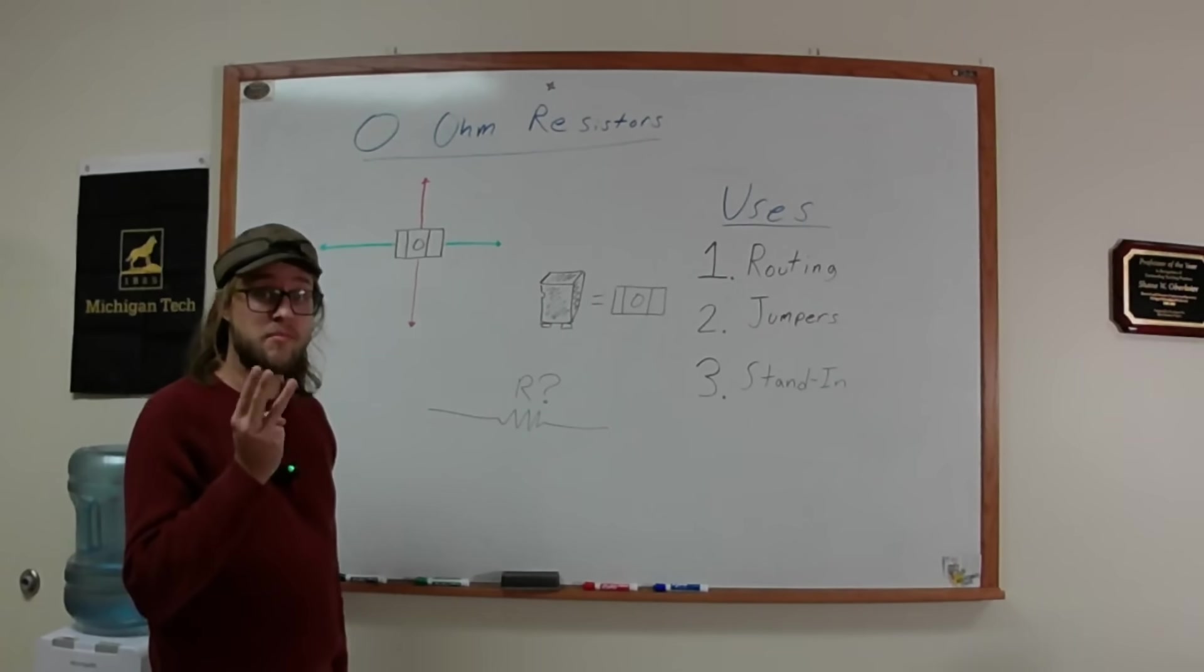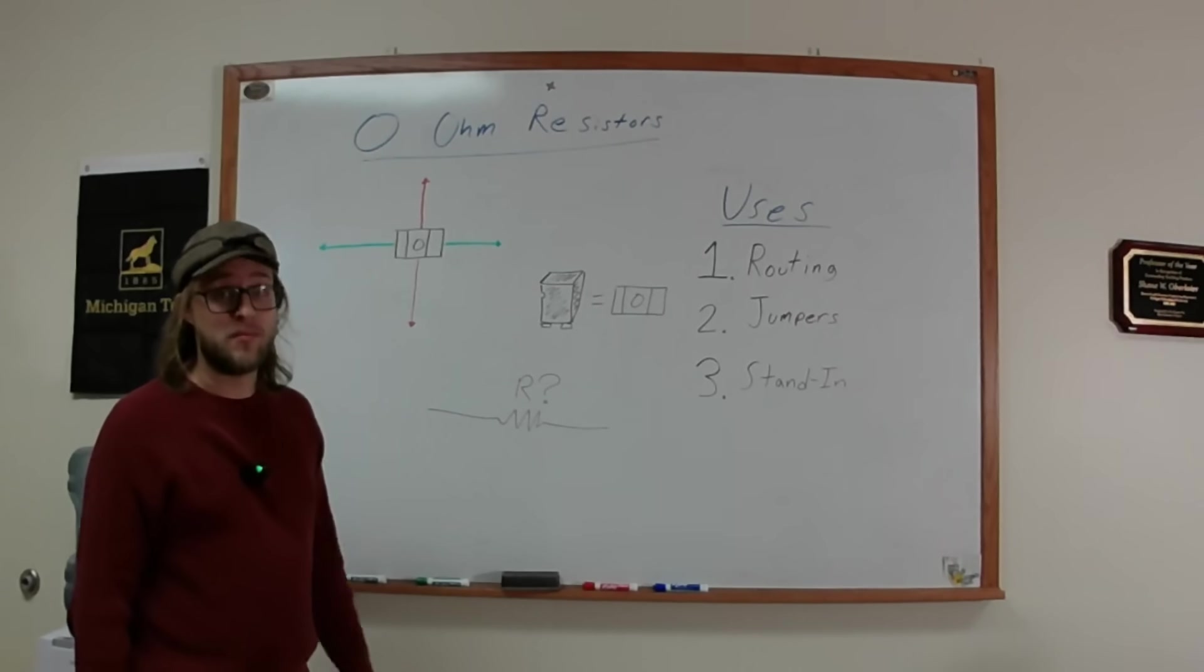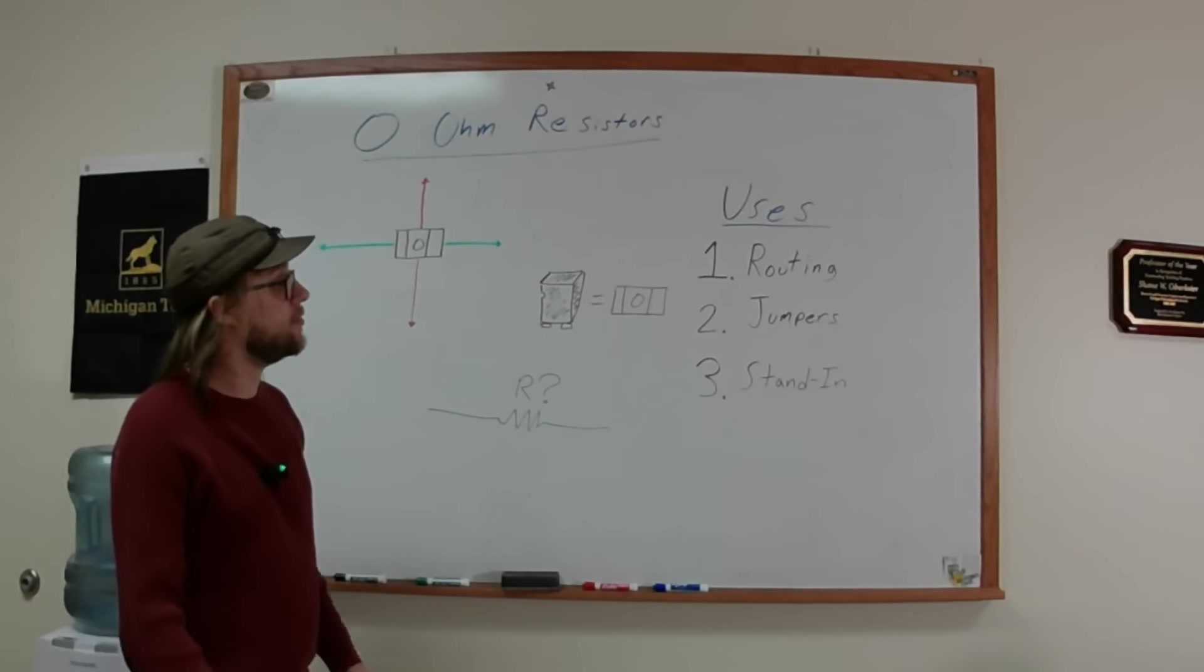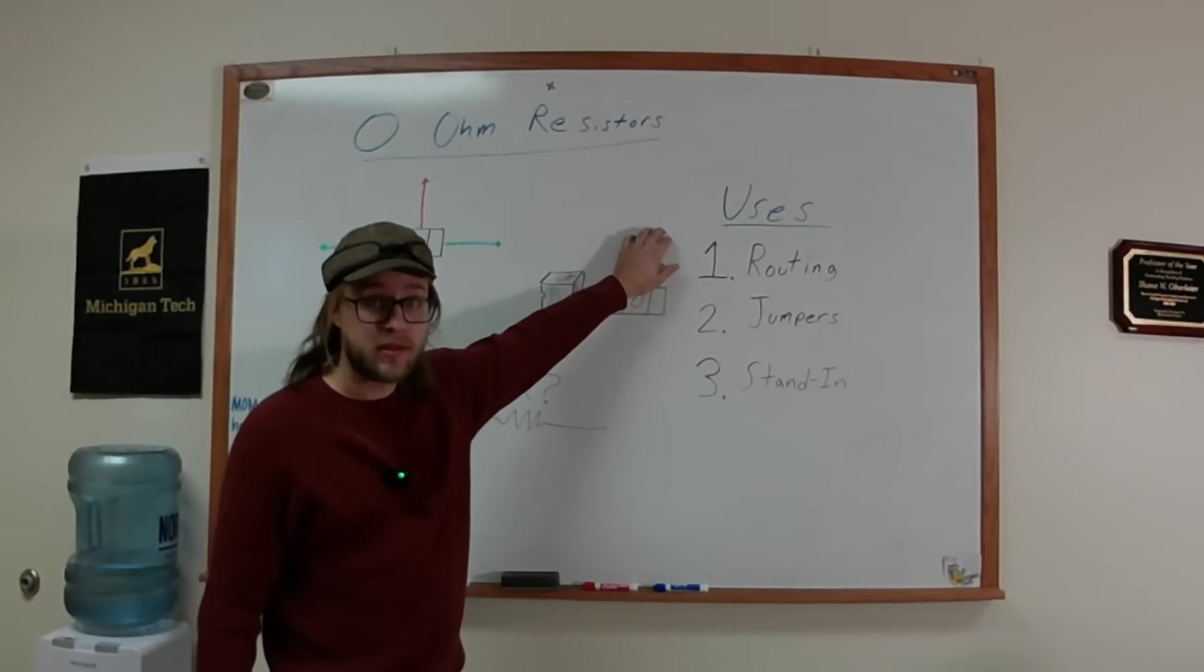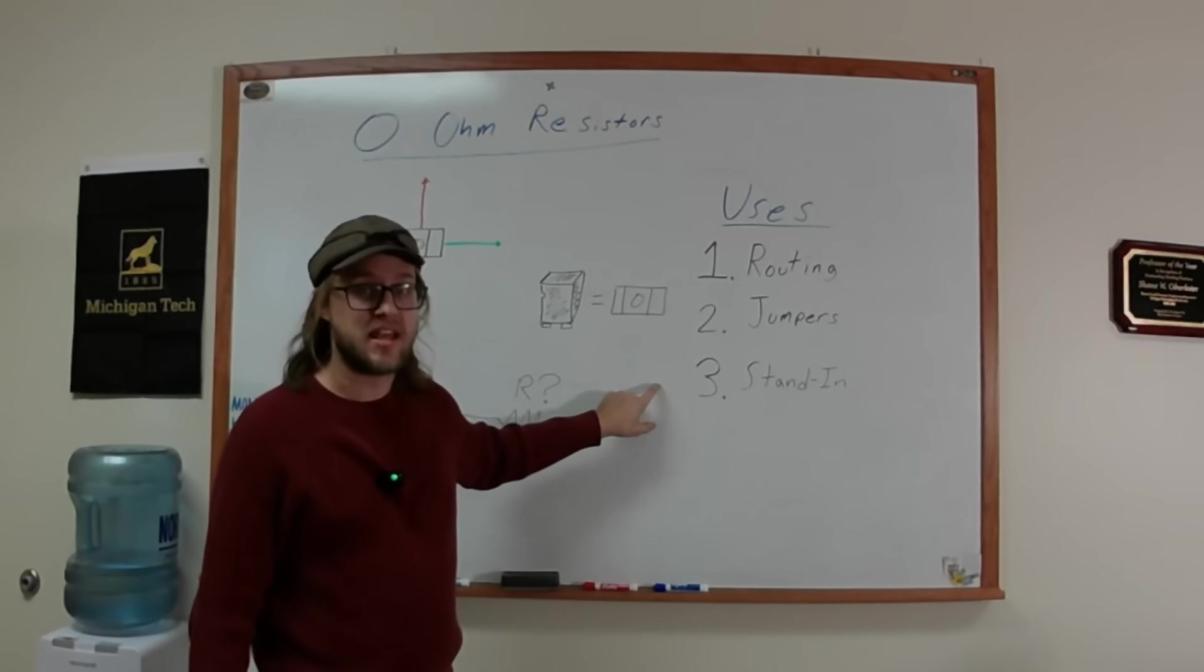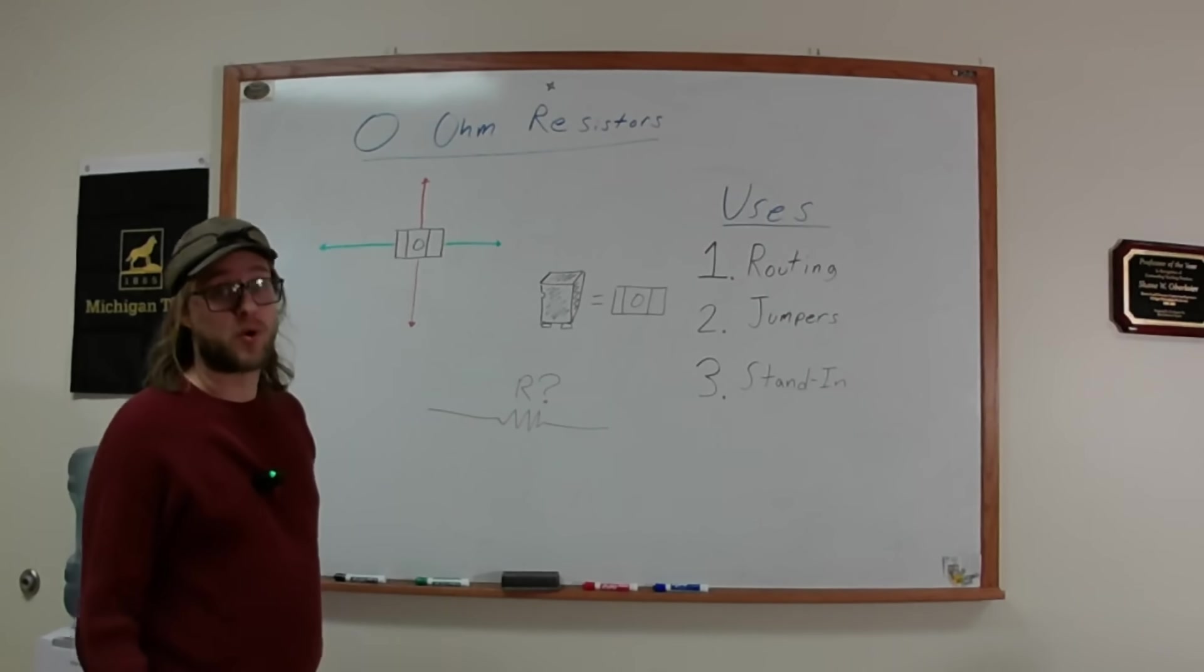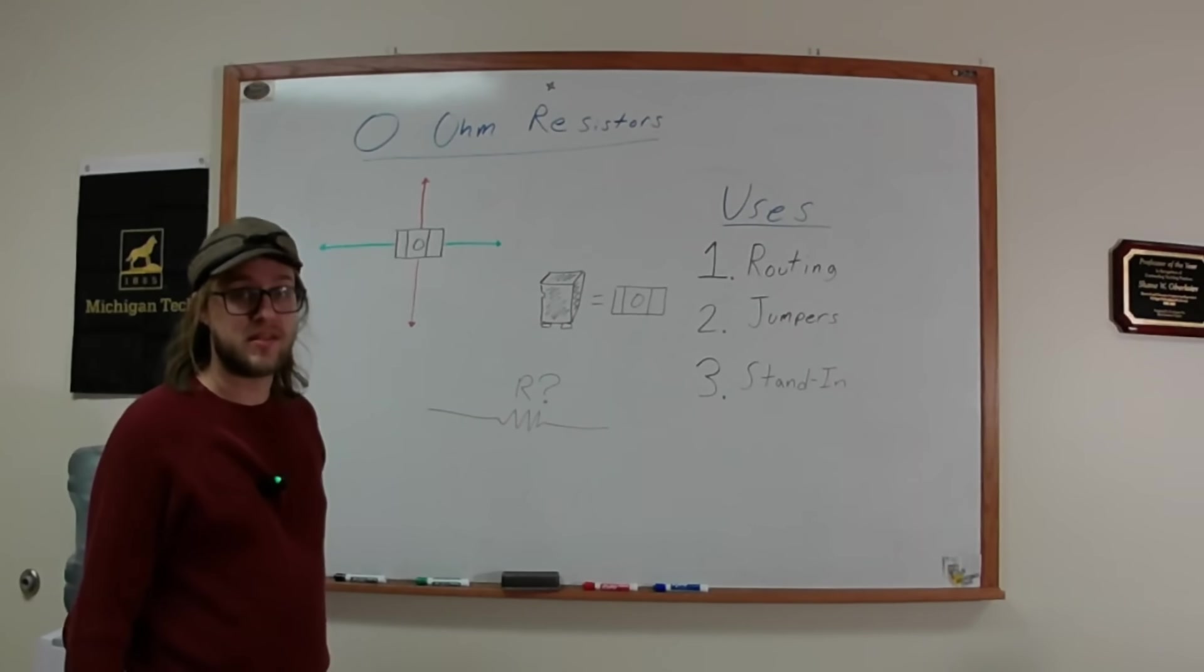So those are the three main uses I've found for zero ohm resistors. There may be more. If you want to comment those, that would be cool. But routing for circuit boards, used as jumpers, and potentially as stand-ins. So anyways, if you have any other ideas or questions for videos that you might like to see, feel free to comment below and thanks for watching.